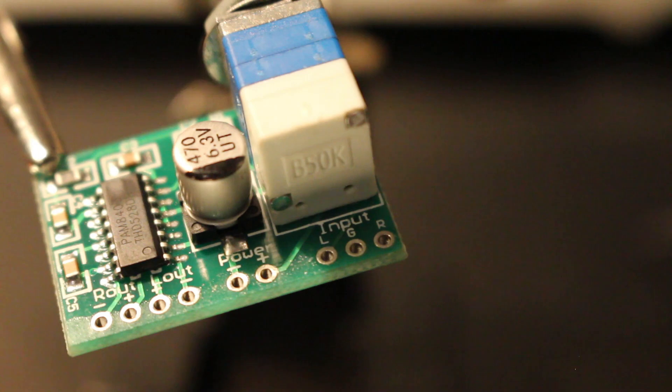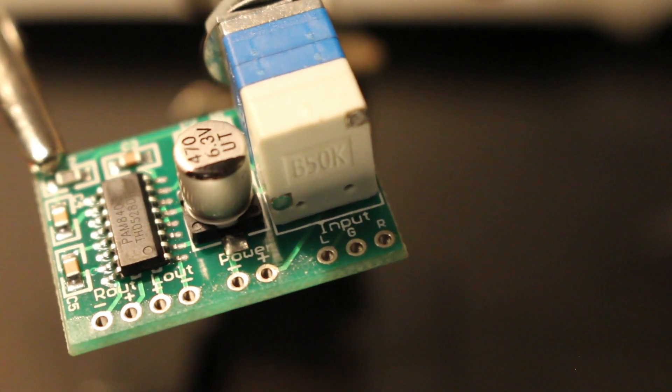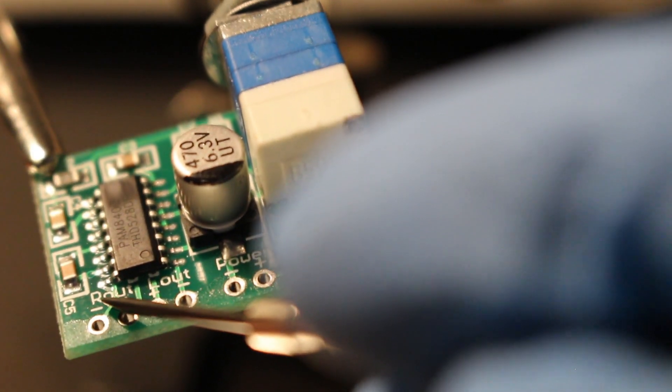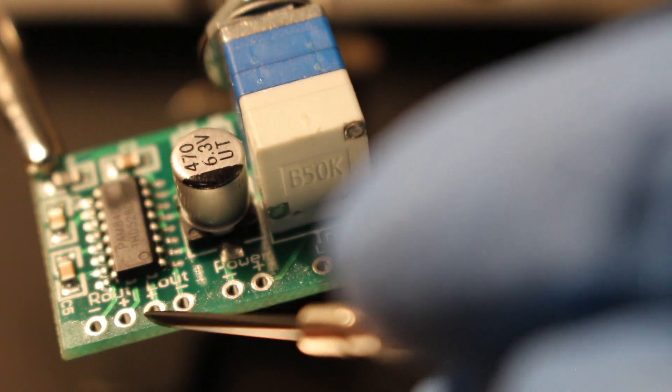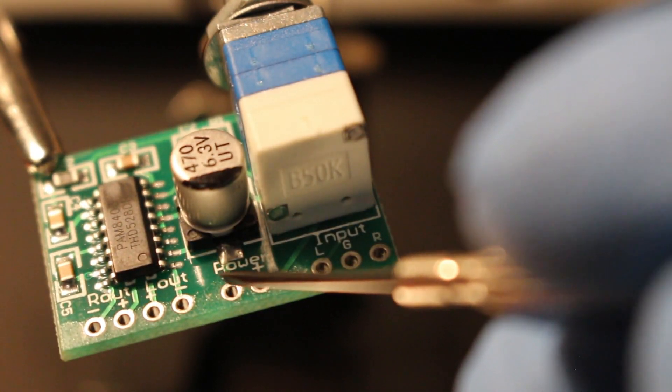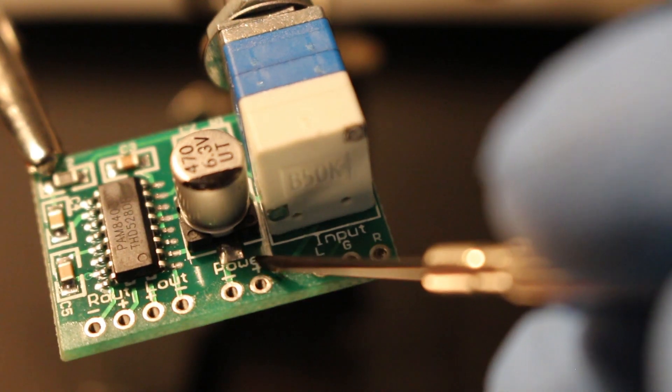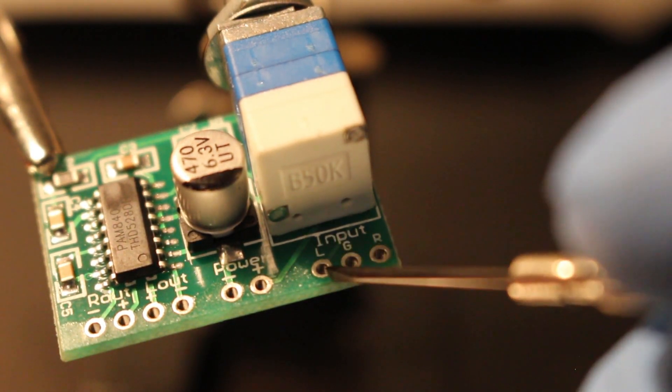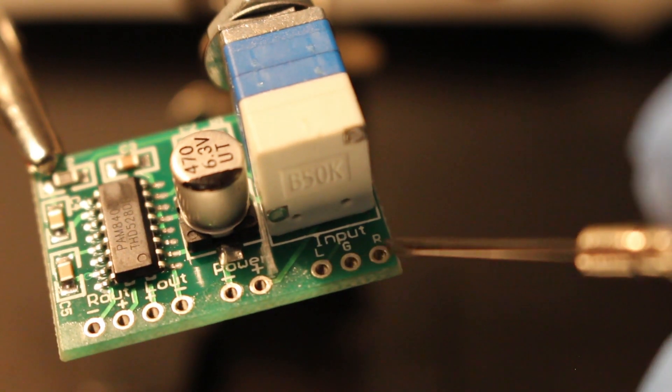So here, we're going to take a look at our 9 connections. As we can see, we have our negative and positive for our right speaker, our positive and negative for our left speaker, our negative and positive for our power source, and our input: left, ground, and right.